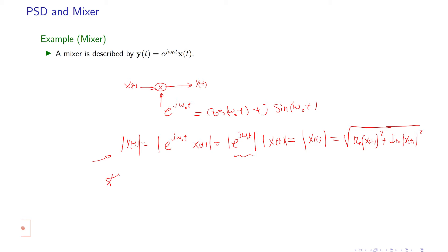However, if I calculate the phase of y of t, from this relationship it's going to be j omega naught t plus the phase of x of t. So it means that you only modify the phase of your signal, and this is called a mixer.